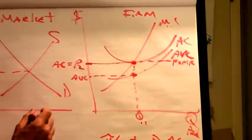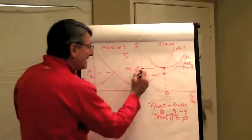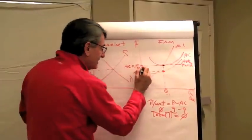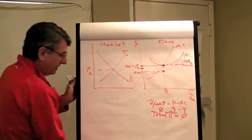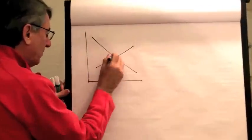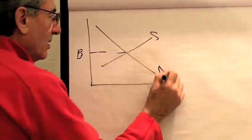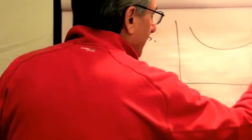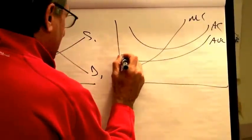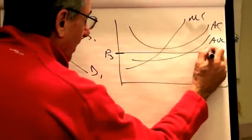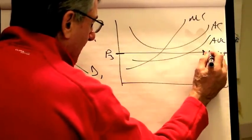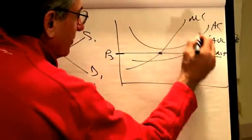What if the price is lower than the minimum point of the average cost? If the market price is P3 — with the firm's average cost, average variable cost, and marginal cost shown — and this price P3 is below minimum average cost, this is the marginal revenue and price, and it's the firm's demand curve. They will produce where marginal revenue exceeds marginal cost — that's the quantity Q3.